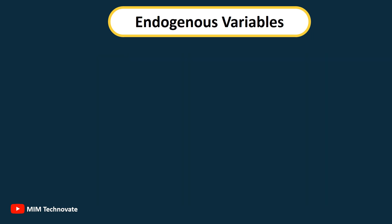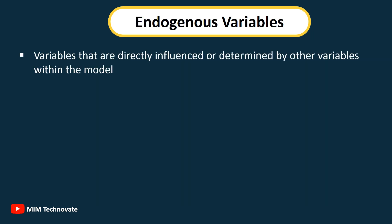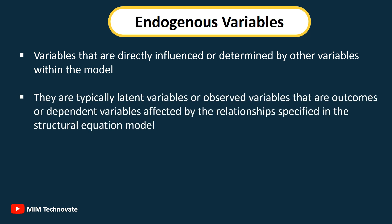Endogenous Variables: Variables that are directly influenced or determined by other variables within the model. They are typically latent or observed variables that are outcomes or dependent variables affected by the relationships specified in the Structural Equation Model.